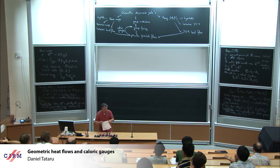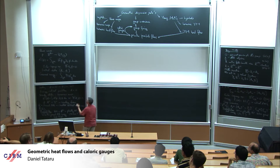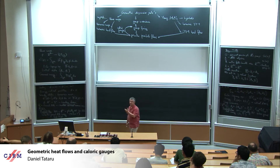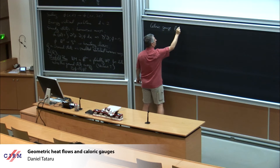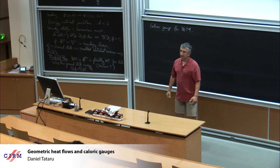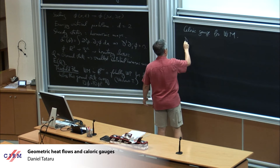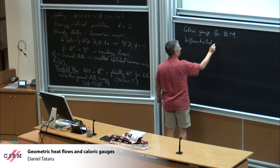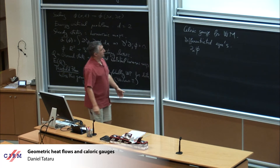Now I'm going to get to the main point of my story, which is where the caloric gauges come up. Let me begin with the wave map equation, because this is the beginning of the story. When you look at wave maps, just by looking at the equations, there's no obvious gauge invariance. To get to this gauge invariance, what you have to do is look instead at differentiated equations — a system of equations for D_alpha phi.